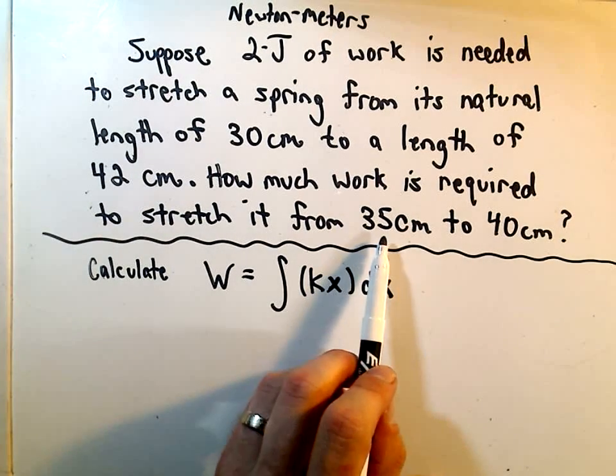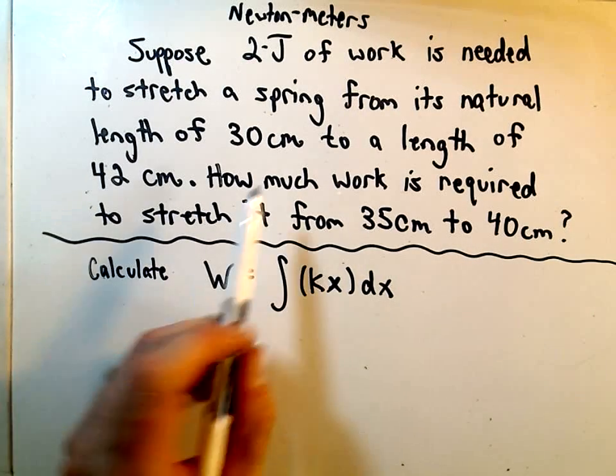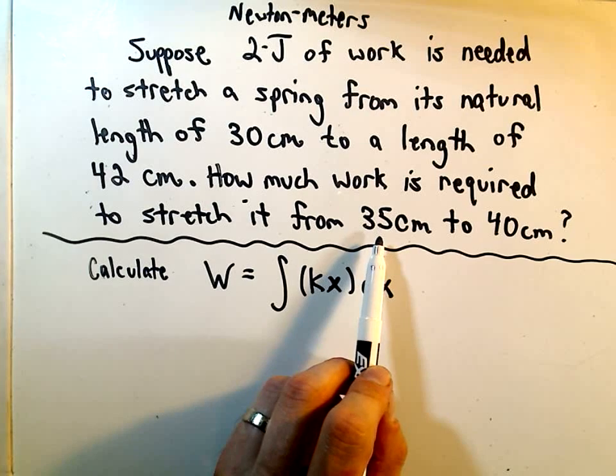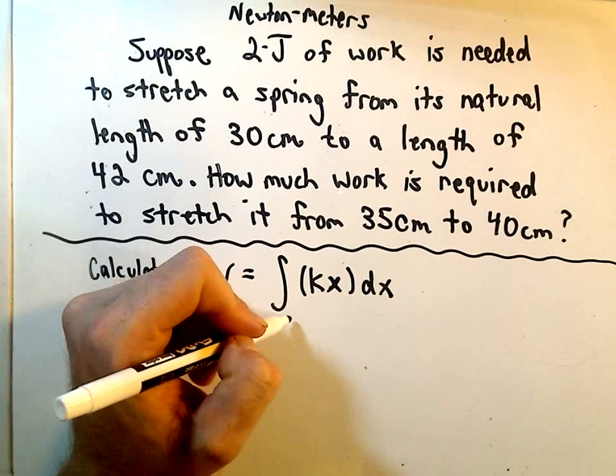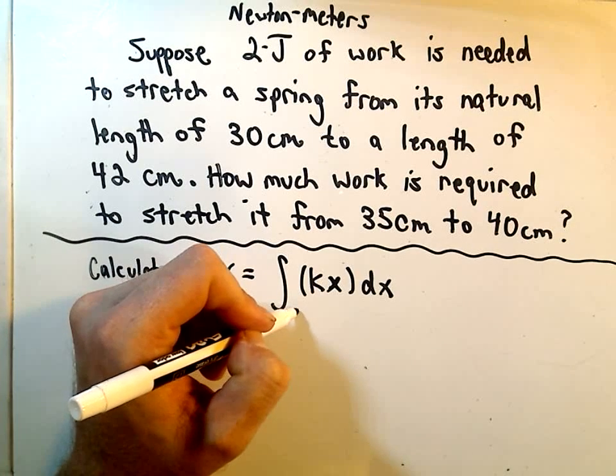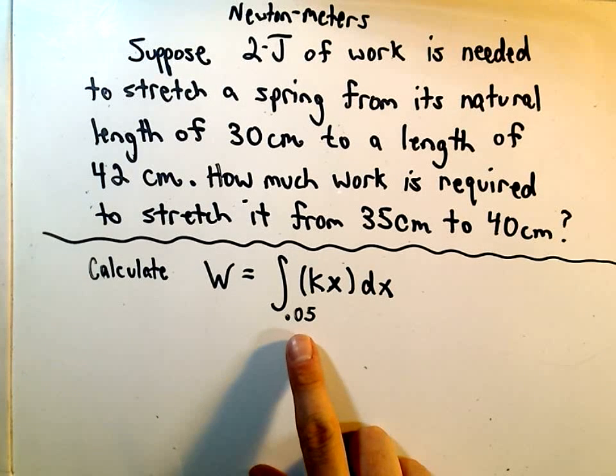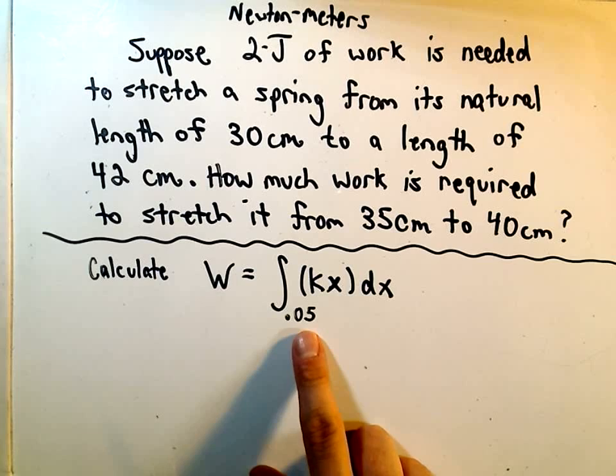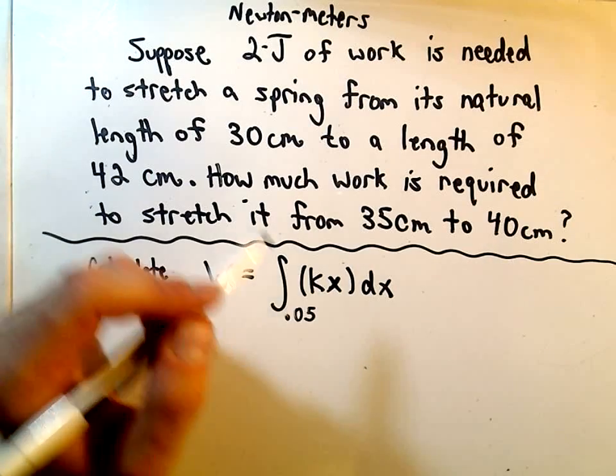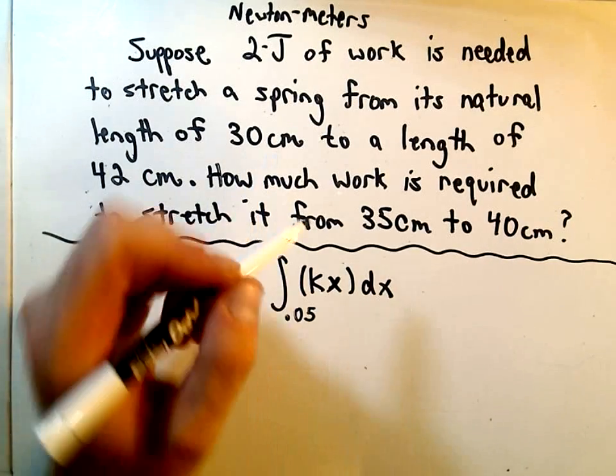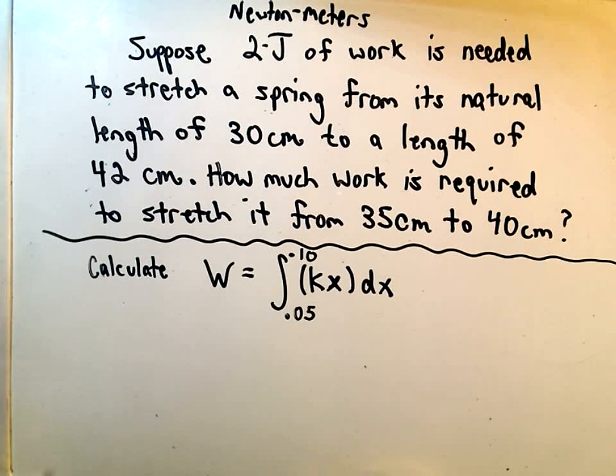Notice we're going to stretch it from 35 centimeters to 40 centimeters. Its natural length is already at 30 centimeters. So 35 centimeters is going to be 5 centimeters beyond its natural length, and if we convert 5 centimeters into meters we get 0.05. So we're calculating the work done from stretching it from a distance that's already 0.05 meters beyond its natural length. We want to stretch it out to 40 centimeters, which will be 10 centimeters beyond its natural length, which is 0.10 meters. So that's ultimately what we have to calculate.